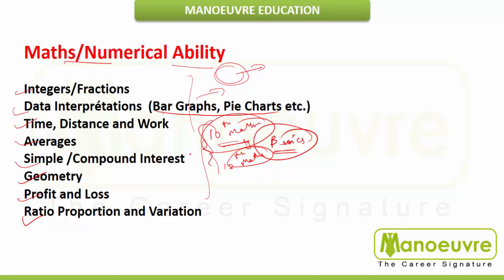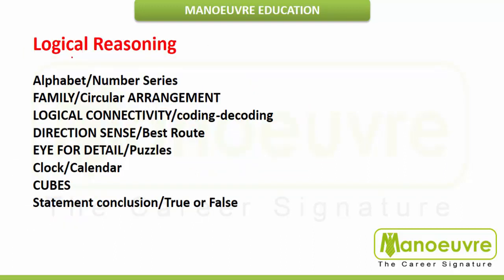Next comes Logical Reasoning — a very important and very scoring section, because there are tricks that, if applied correctly, will 100% fetch you the correct marks. The first topic is alphabet and number series, second is family and circular arrangement, then logical connectivity, coding-decoding, direction sense and best route, and detail puzzles — we have both basic and advanced level puzzles covered.